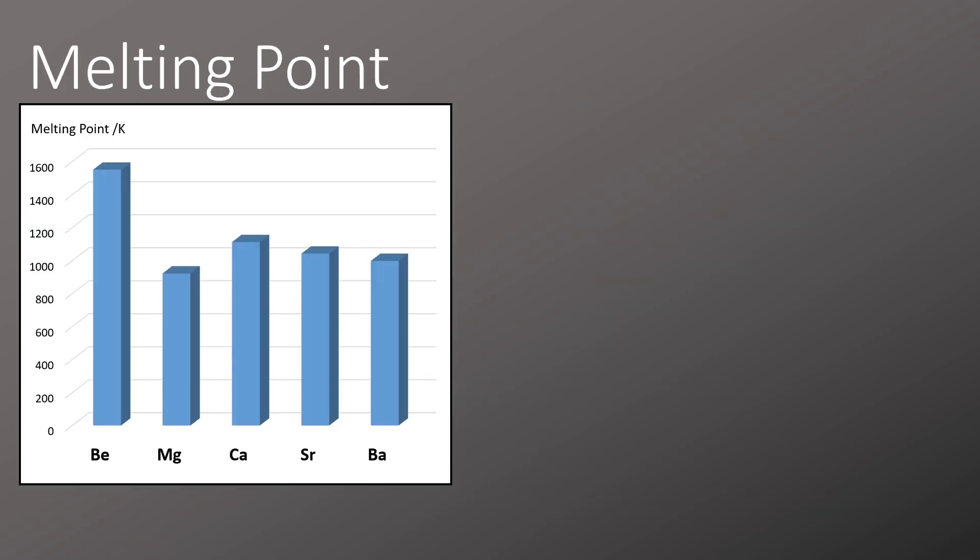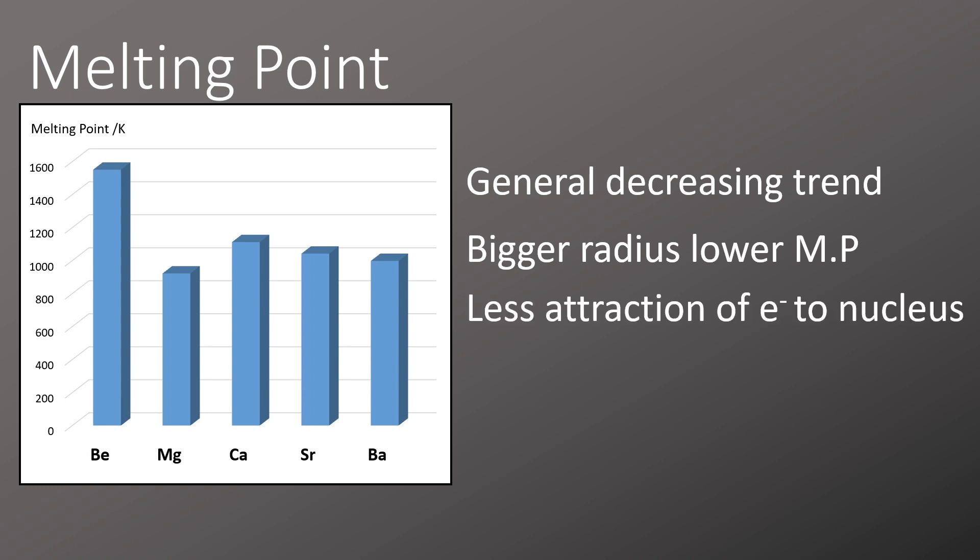Looking at melting point, as you go down the group, the melting point decreases. This is generally because the atomic radius increases, so now the delocalized electron in the metallic bond is further from the nucleus, so the forces of attraction are weaker and less energy is needed to overcome them and melt the metal.